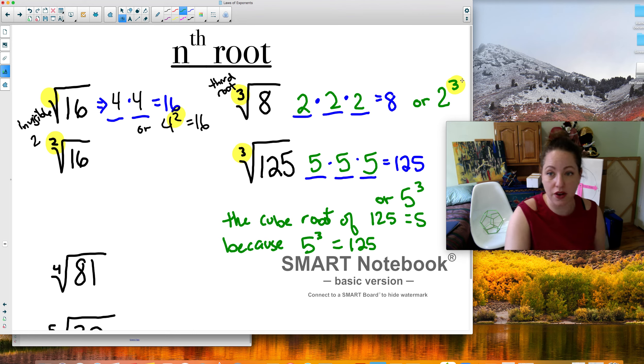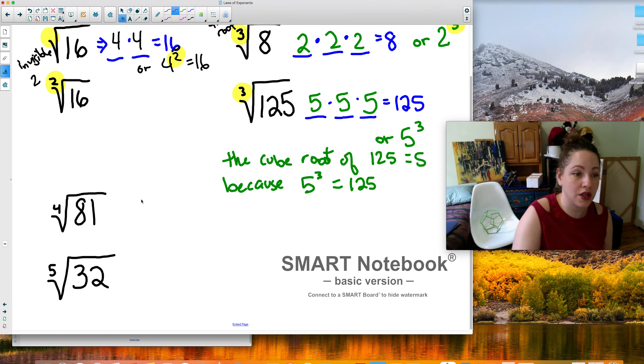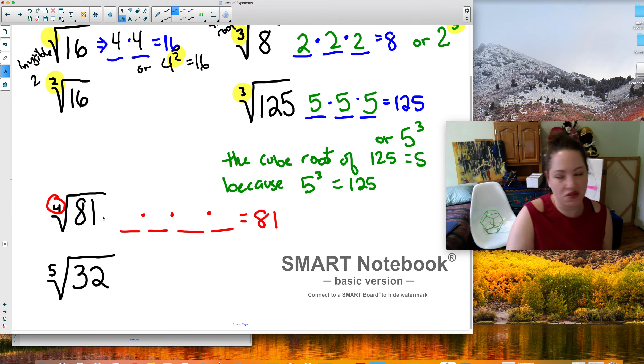So the cube root of 125 equals 5 because 5 cubed equals 125. So they're opposites of each other. So what does this mean with higher roots? Same exact concept. Fourth root means what number 4 times?